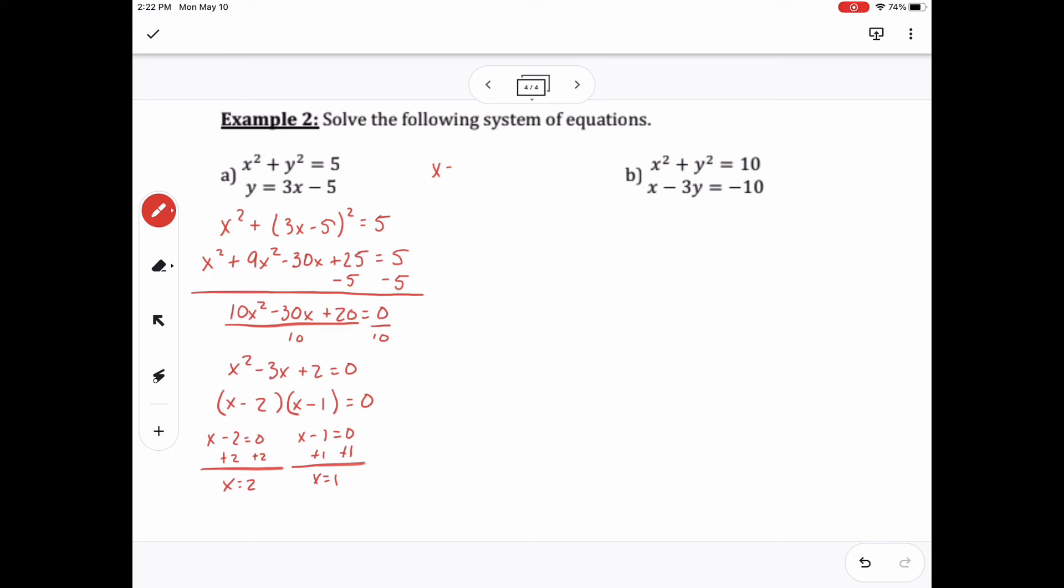So then I'm able to get 2 and 1 for my x values, and then I go to my y equals 3x minus 5 and plug in 2 and 1 in for that.